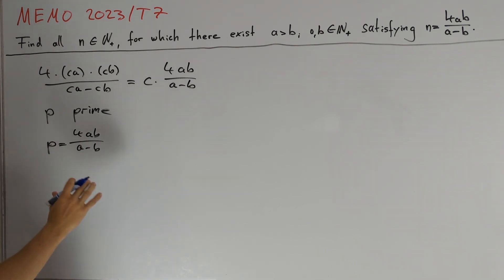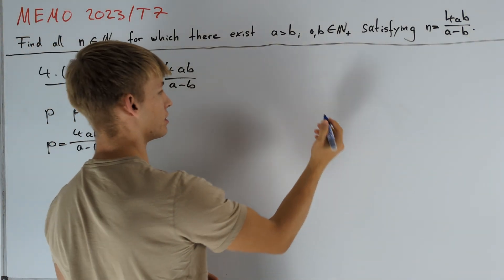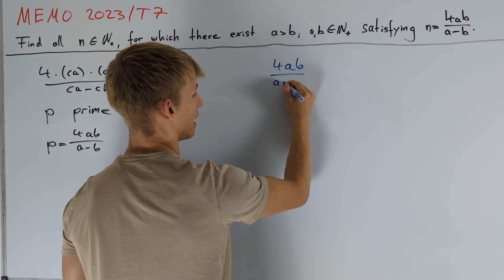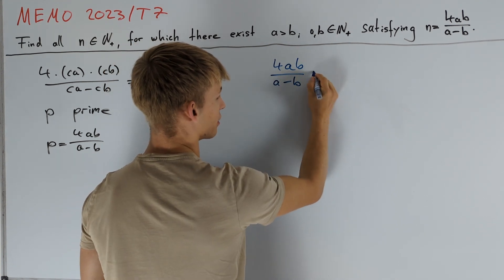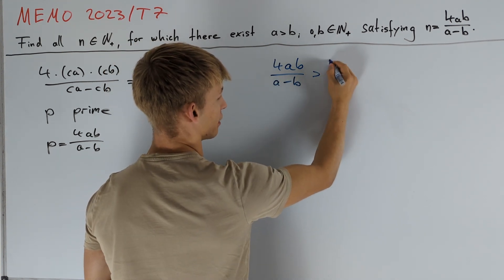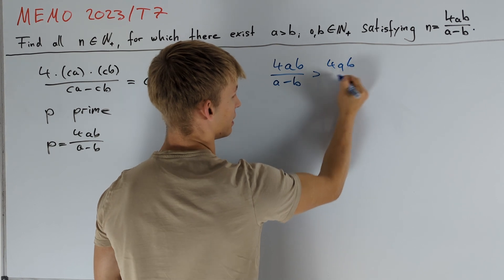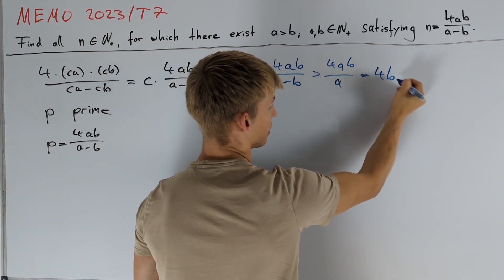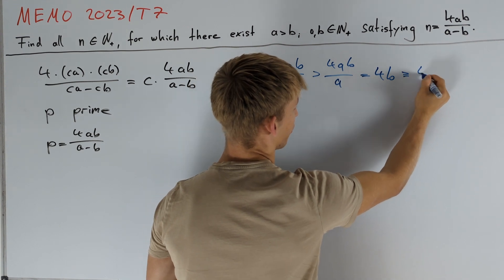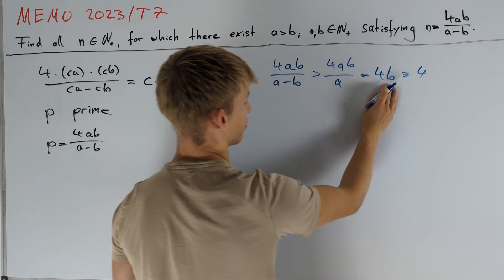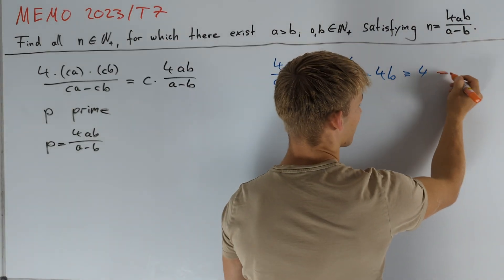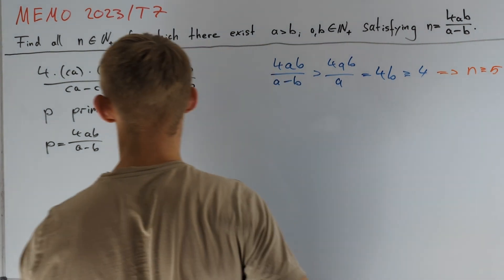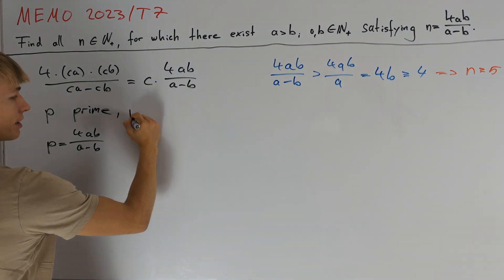The case p equals 2 is not possible for size reasons, because 4ab divided by a minus b is greater than 4ab divided by a, which equals 4b, which is greater than or equal to 4 since these are positive integers. This tells us that n is greater than or equal to 5, so we can indeed assume p is not equal to 2.